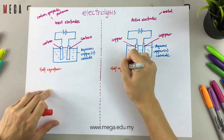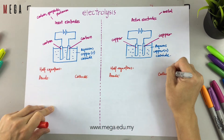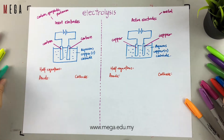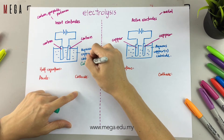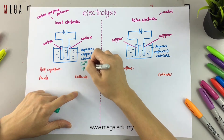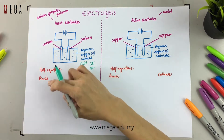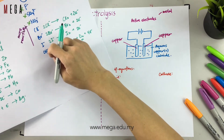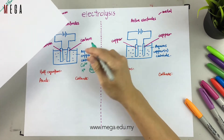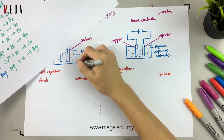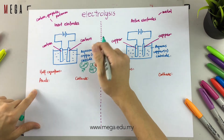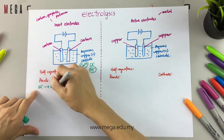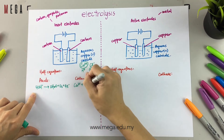So what are the half equations? Before we look at the half equations, always list out all the ions present inside the electrolyte. For copper chloride aqueous solution, there are also hydrogen and hydroxide ions. Based on the discharge priority, hydroxide is lower than chloride, so chloride is discharged at the anode. Copper is discharged at the cathode. These are the half equations.